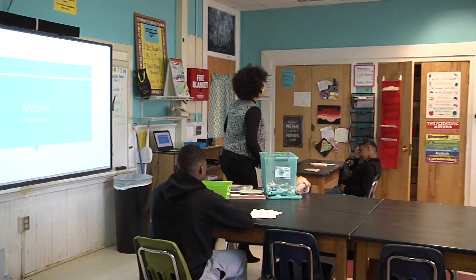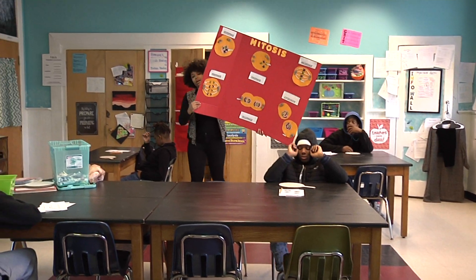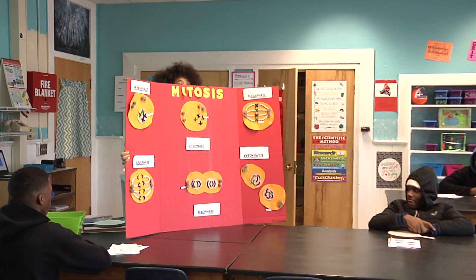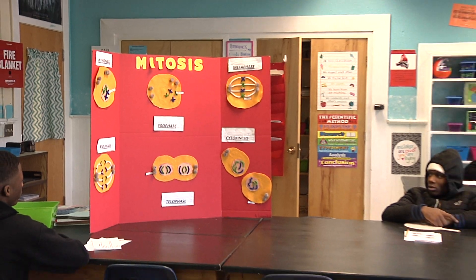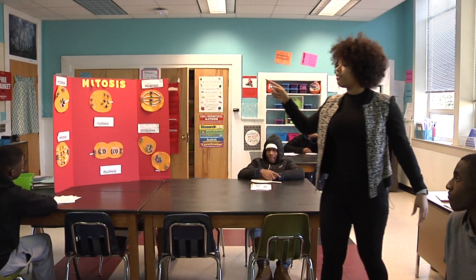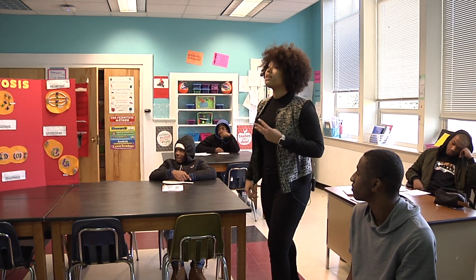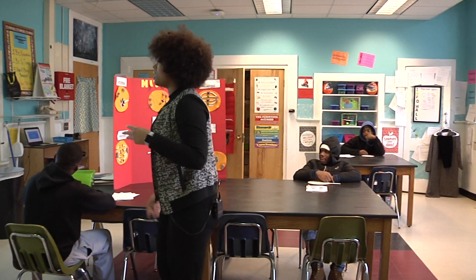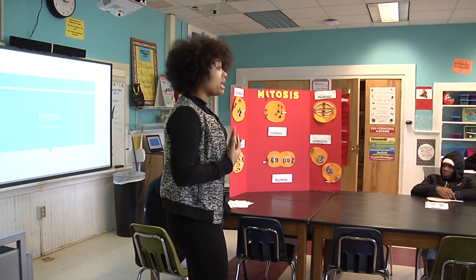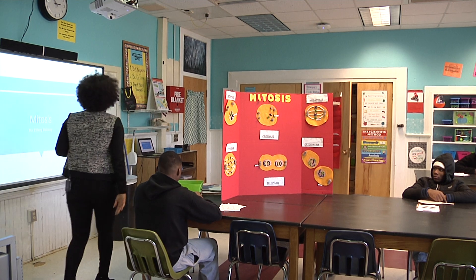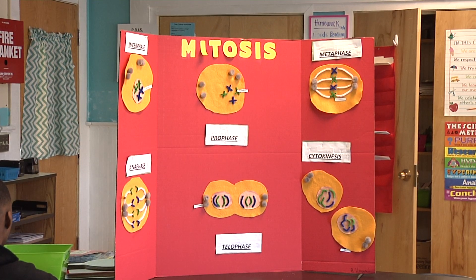Yesterday we spent a good amount of time reviewing this poster. We said that the cell spends the majority of its time in interphase, and we know that interphase is divided into three subphases: G1, S, and G2. After that, we go into the mitotic or M phase, and then cytokinesis, where the cytoplasm is actually split into two cells. Today we are going to further that.